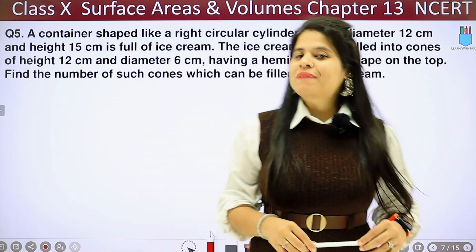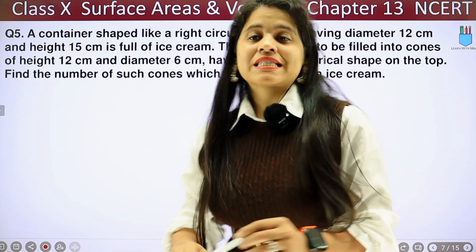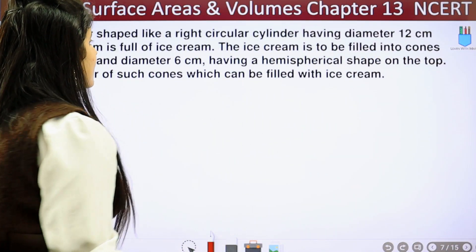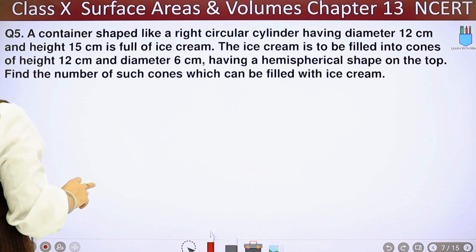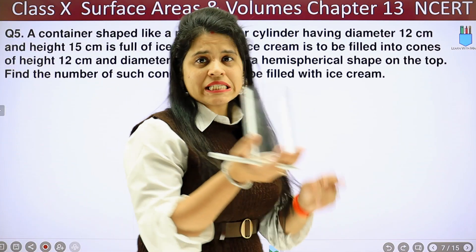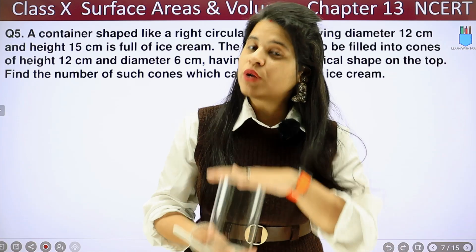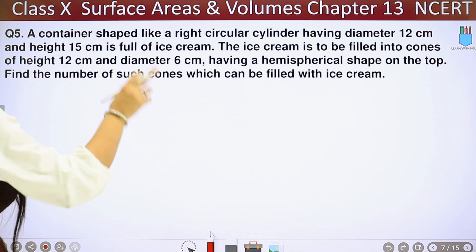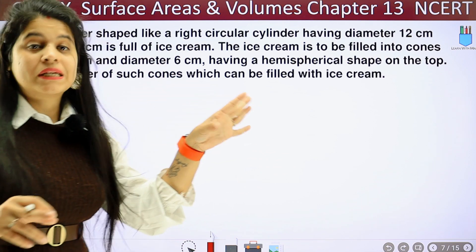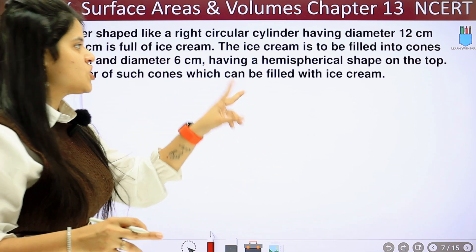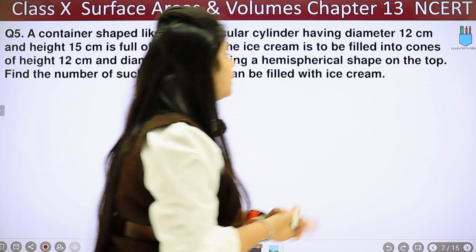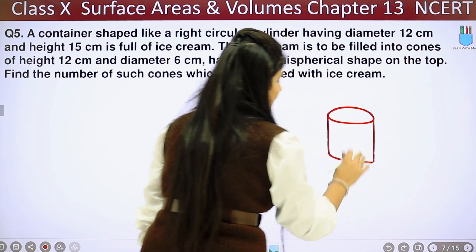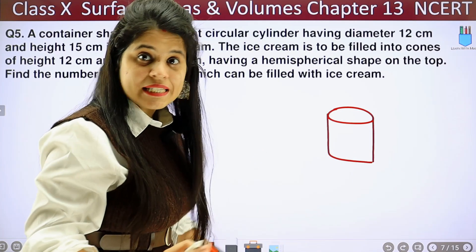Hello my lovely students, this is Mansi. Welcome back to the channel. We are on the 5th question of exercise 13.3. The question says a container shaped like a right circular cylinder having diameter 12 cm and height 15 cm is full of ice cream. So this is a container in which the whole ice cream is filled.